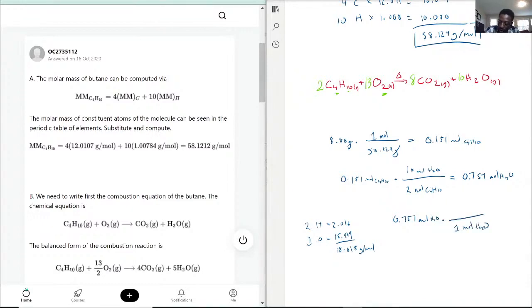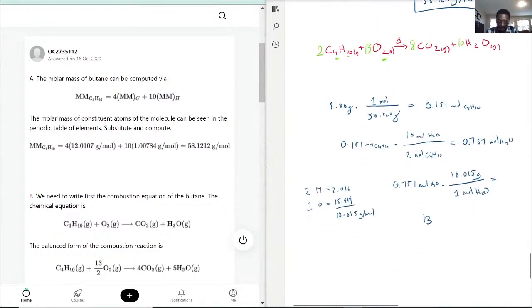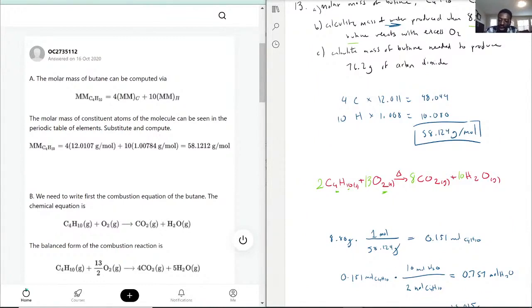We throw that into the equation: 0.757 moles of H2O times 18.015 grams per mole. This times that, we have in total 13.6. We want three significant digits. 13.6 grams of H2O. That is our answer when the limiting reagent is butane reacting with excess oxygen at 8.80 grams of butane.